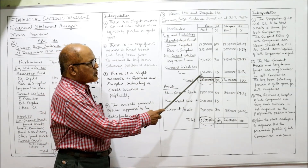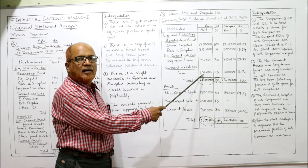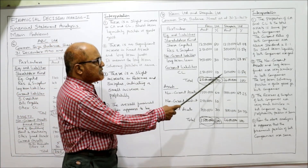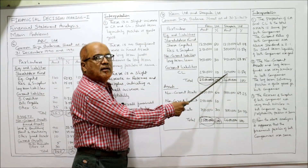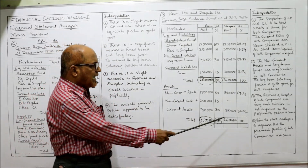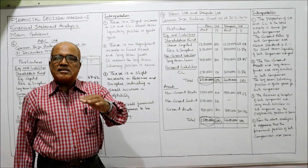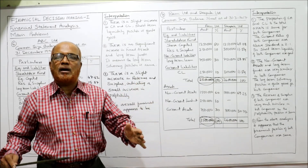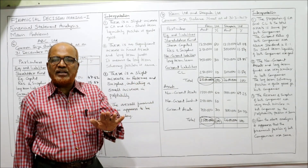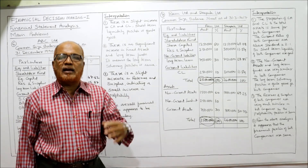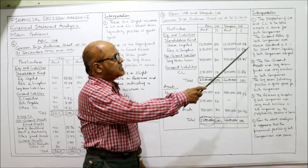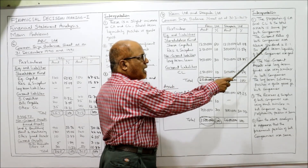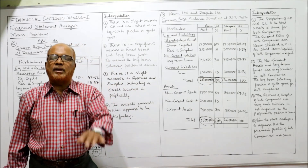Current assets are more than double the current liabilities. For Ram Limited: current liability is 2 lakh 50,000 — double is 5 lakh — but current assets exceed 5 lakh, so the current ratio is more than 2:1. For Deepak Limited: current liability is 3 lakh — double is 6 lakh — but current assets are 8 lakh, which is more than double. So the short-term liquidity position of both companies is good. There is not much difference in the proportion of current assets and current liabilities in both companies, and the current ratio of both companies is above the standard of 2:1.